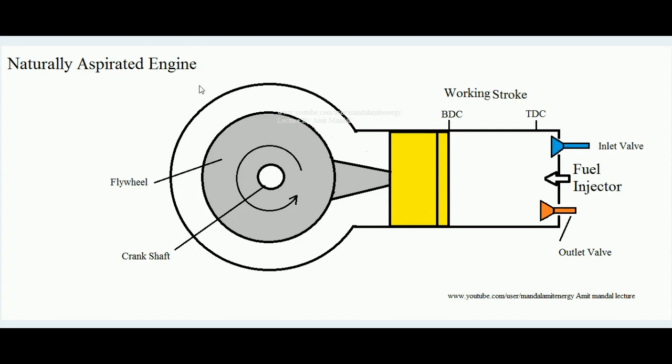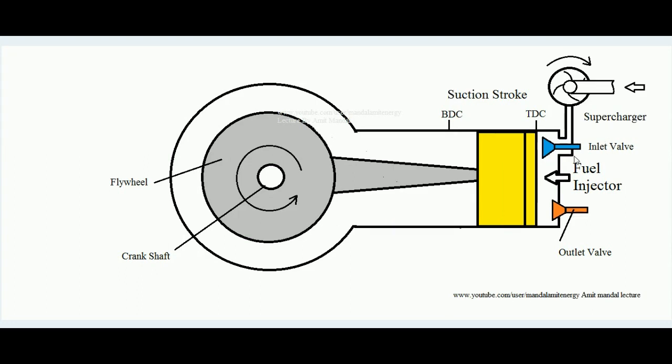Now what happens in supercharging? Over the inlet valve one more component, a supercharger, is connected. You can see it is a sort of air compressor. Now what is its job? When suction stroke happens, when suction stroke executes, the piston moves from TDC to BDC.